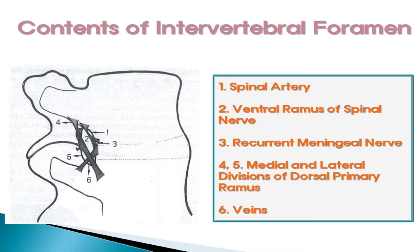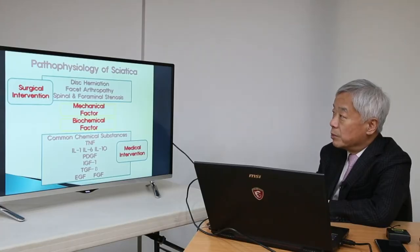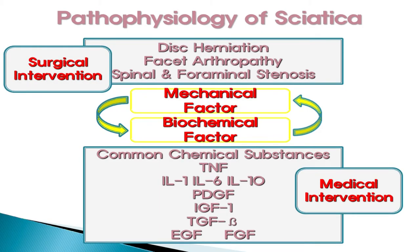This is the contents of the intervertebral foramen again. The spinal artery is located in the anterior side of the vertebral canal. There is a ventral ramus with spinal nerve here, and a recurrent meningeal nerve here. The primary ramus is located on the posterior side along with some veins. This is the pathophysiology of sciatica. Mechanical factors such as disc herniation, facet arthropathy, and spinal and foraminal stenosis need surgical intervention. Biochemical factors such as chemical substances including TNF need medical intervention.